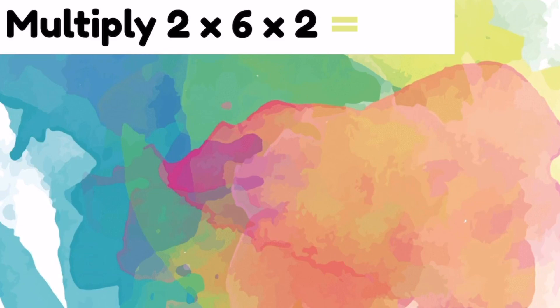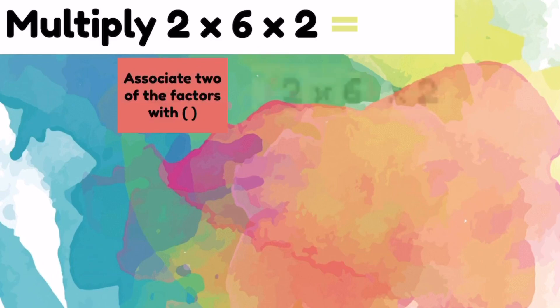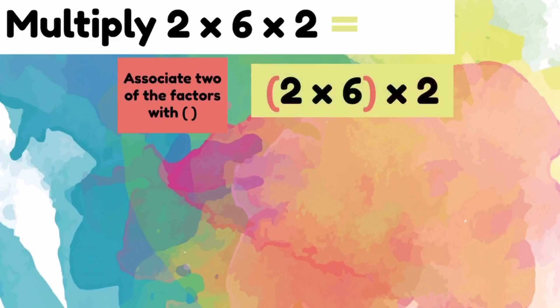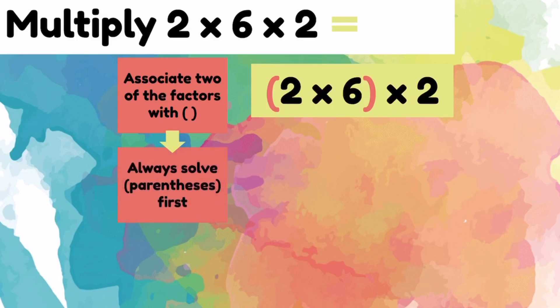Multiply 2 times 6 times 2. We will start by associating two of the factors with parentheses. We will associate or group 2 times 6 together. Now we will always solve parentheses first. The 2 and the 6 are inside of the parentheses, so let's multiply 2 times 6 first. 2 times 6 equals 12.